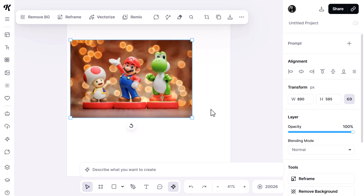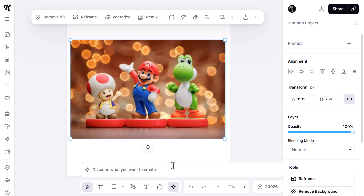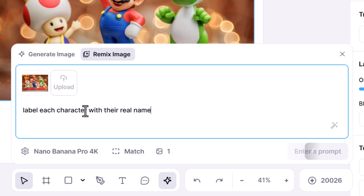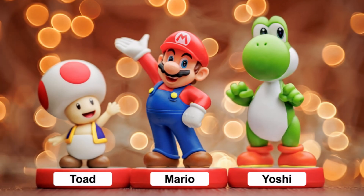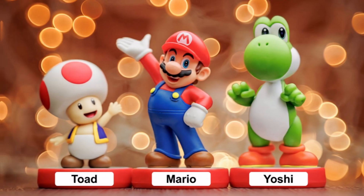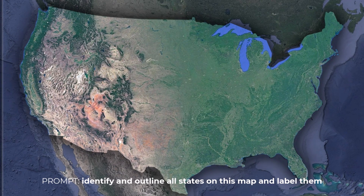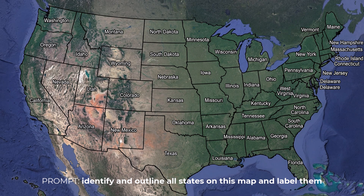Everything we've done has been primarily with fresh generations, so how well does it handle existing images when I introduce them into the mix? I dragged in an image from Super Mario Brothers and asked it to label each character with their real name — we got an accurate result with Toad, Mario, and Yoshi labeled. I also tested it by uploading a shot of the United States of America, asked to identify and outline all the states and label them, and as far as I can see it's all pretty accurate.